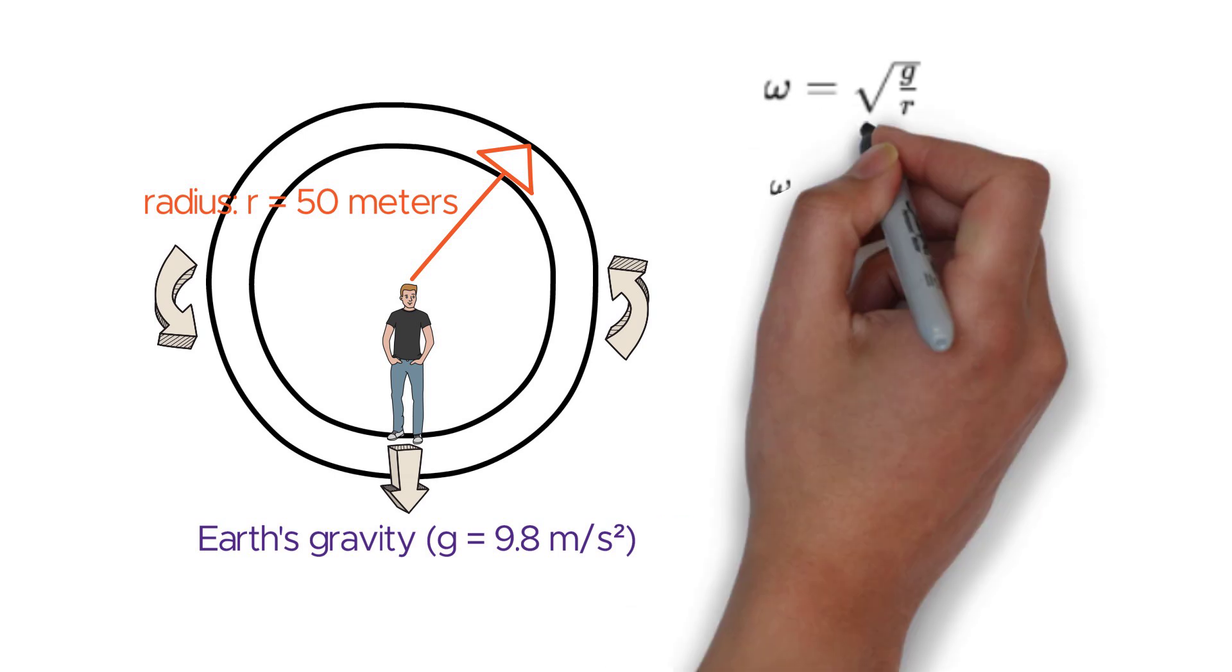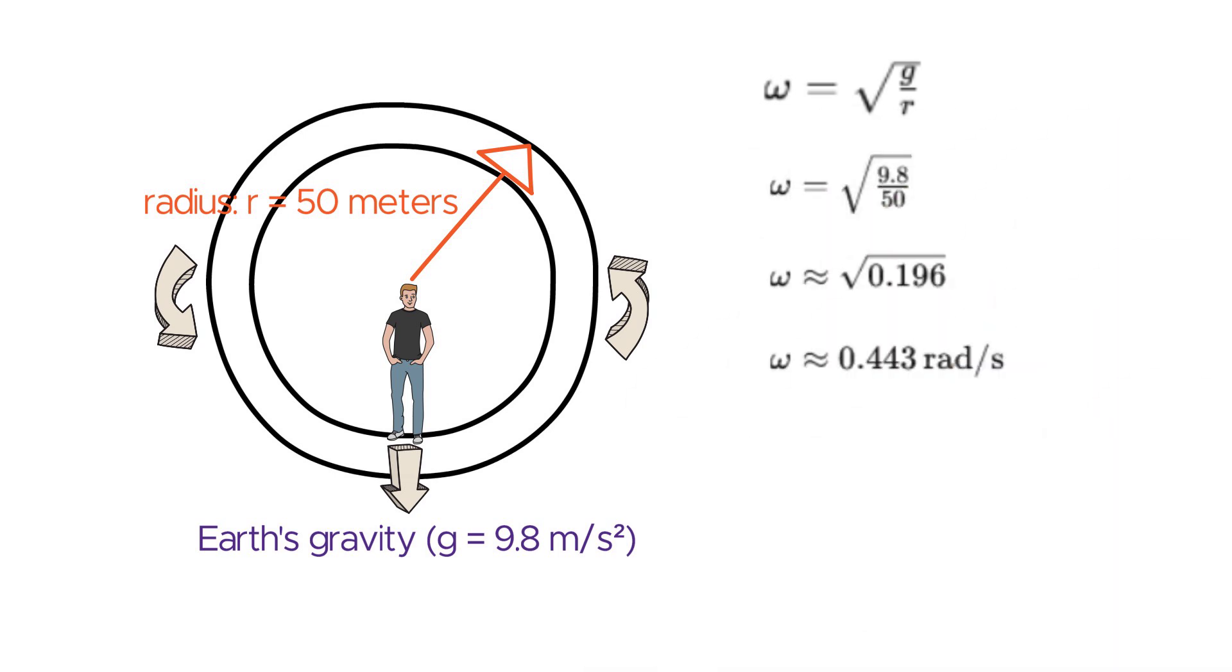So, the space station needs to rotate at approximately 0.443 radians per second to simulate Earth's gravity at a radius of 50 meters.